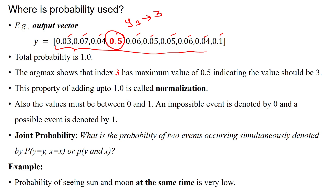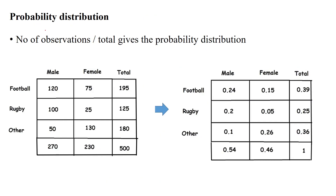We use total probability equal to 1 because of the normalization process. We also use joint probability and conditional probability based on circumstances. Joint probability is used when two events occur simultaneously — for example, the sun and moon appearing at the same time, which has a very low probability. Here an example is given to represent the probability distribution.